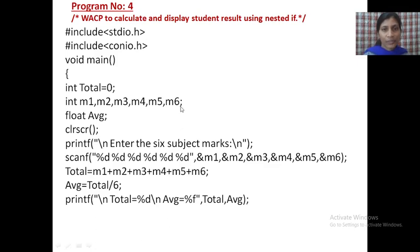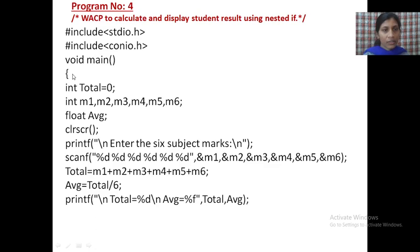This is a student result sheet — how we can calculate the total and average of a particular student. First, write down the header files: #include stdio.h and #include conio.h. Write down these two header files, then the void main function. Execution of the C program starts from here. Then int — I will declare here the data type as int, because we are using total. Total is a variable and int is the data type.